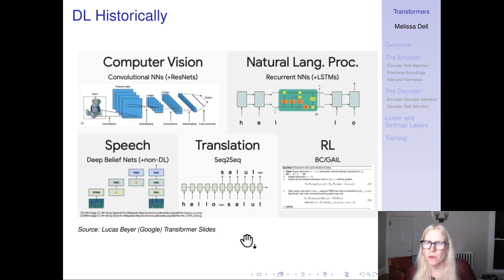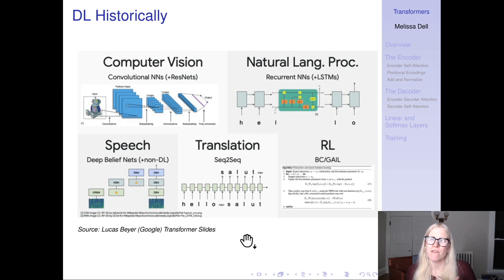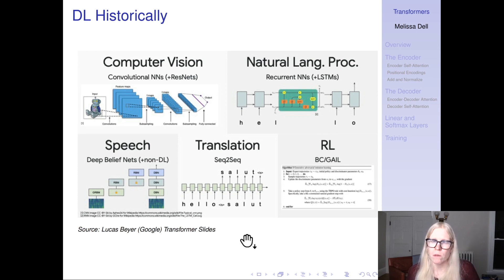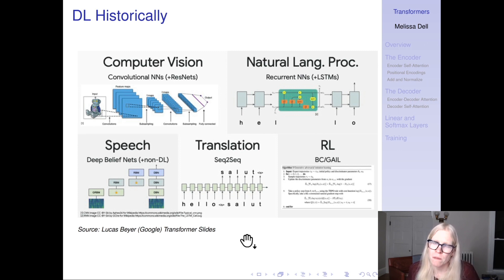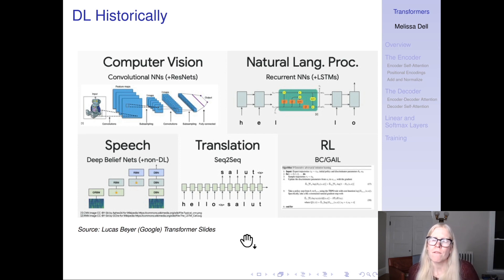If you look at deep learning historically — and by historically I mean more than a few years ago — when you looked across different areas in which neural networks were applied, very different methods were used. In computer vision, people used convolutional neural networks; ResNet was state-of-the-art. In natural language processing, recurrent neural networks and LSTMs were used. In speech, people weren't even really using deep learning. In translation, there was seq-to-seq, which we saw last class, and reinforcement learning also had its own very distinct methods.